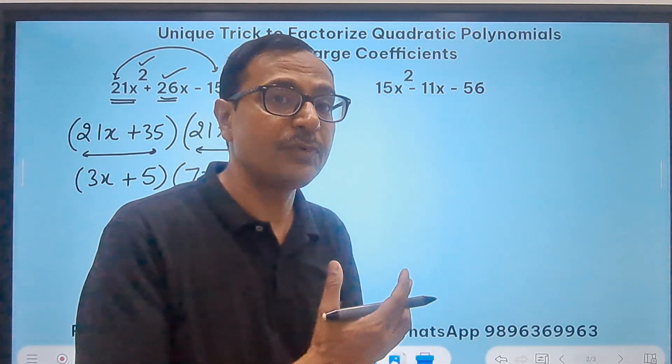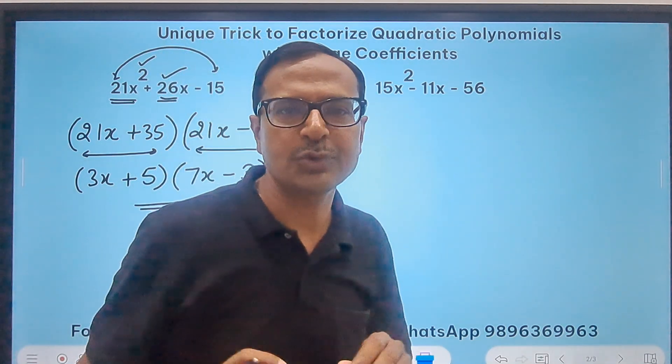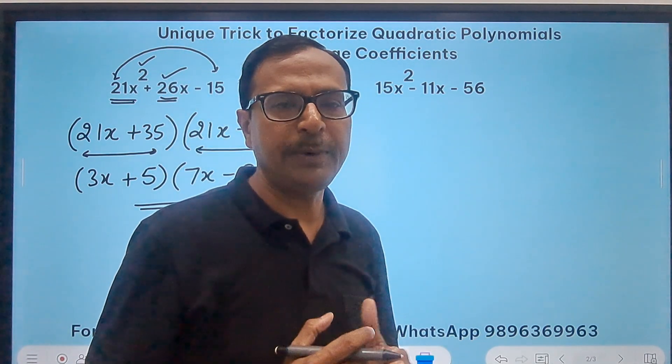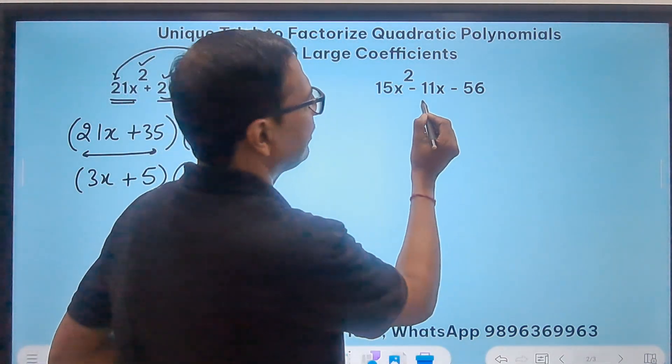I will take two or three more examples with larger coefficients now, and we will try to eliminate the steps also so that we can reduce the time to be taken for factorizing such polynomials. Here we have negative 11.